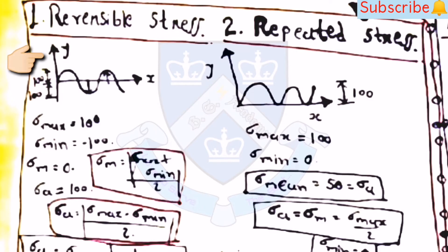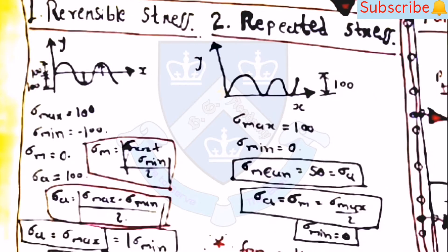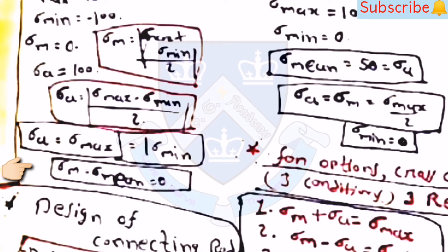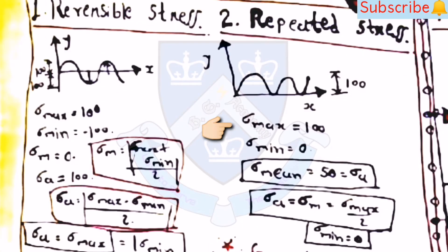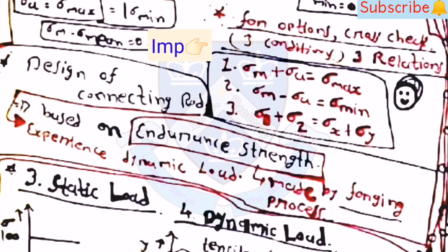From this topic, every year there may be one question on reversible stress or repeated stress. For reversible stress, Sigma_m is equal to (Sigma_max + Sigma_min) / 2, and Sigma_a is equal to (Sigma_max - Sigma_min) / 2. For reversed stress, Sigma_max equals Sigma_min and Sigma_m equals zero. For repeated stress, if Sigma_max equals 100 and Sigma_min equals 0, then Sigma_mean equals 50 and Sigma_a equals 50, so Sigma_a equals Sigma_m equals Sigma_max / 2. For cross-checking: Sigma_m + Sigma_a = Sigma_max, Sigma_m - Sigma_a = Sigma_min.